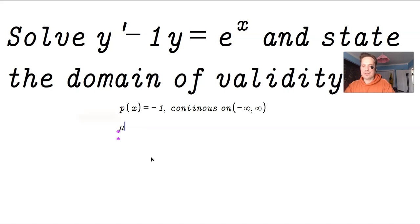Find the μ(t) here, this integrating factor, so it's e raised to the antiderivative of -1 dx, which is then e^(-x).